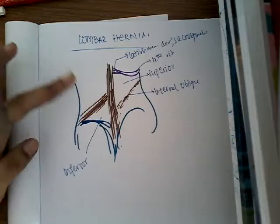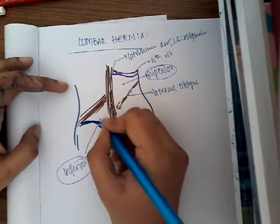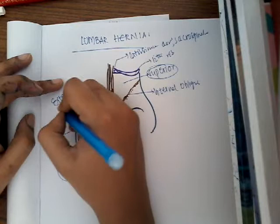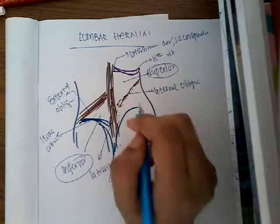For the inferior lumbar triangle, medially you see latissimus dorsi, inferiorly you see the iliac crest, and superiorly you see the external oblique muscle. Any hernia which develops from either the inferior lumbar triangle or the superior lumbar triangle is called lumbar hernia.